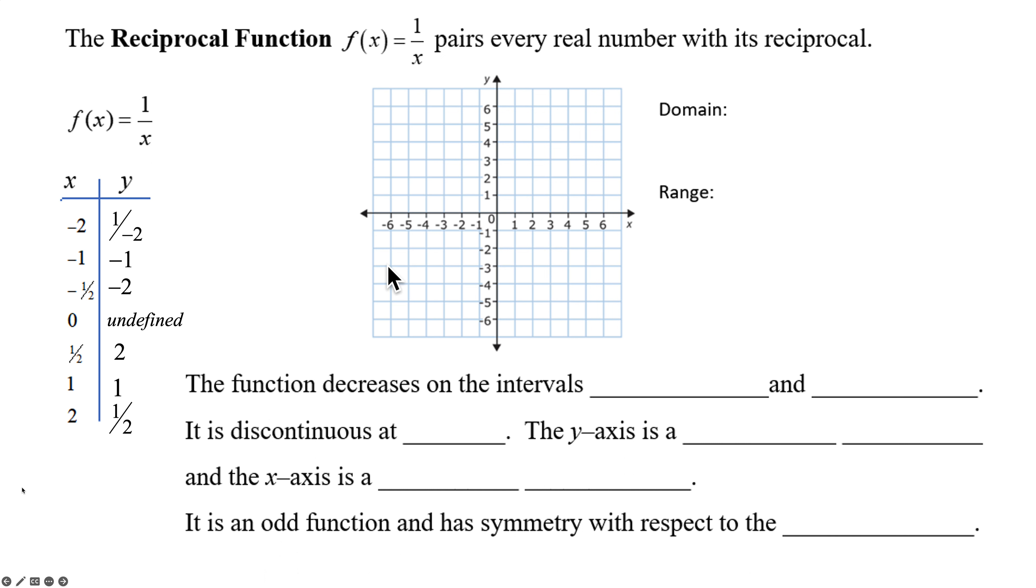The reciprocal of negative one is negative one. The reciprocal of negative one-half is negative two. But if you put zero in for x, now that's undefined. So that's technically where our vertical asymptote is going to be. The reciprocal of one over two is two. The reciprocal of one is one. The reciprocal of two is one-half. So we are going to go ahead and plot those points.